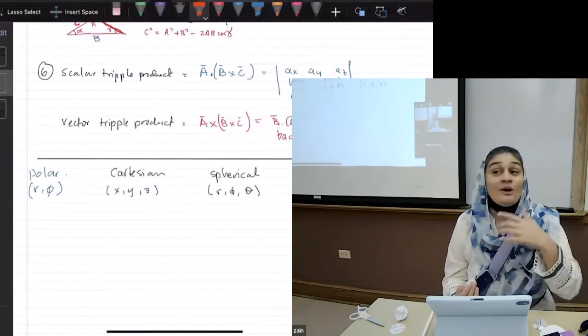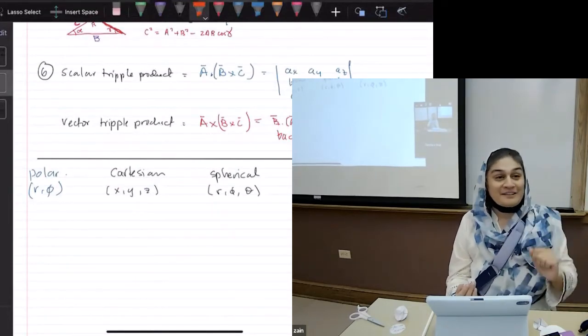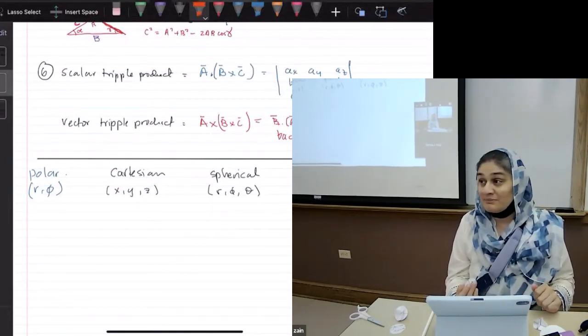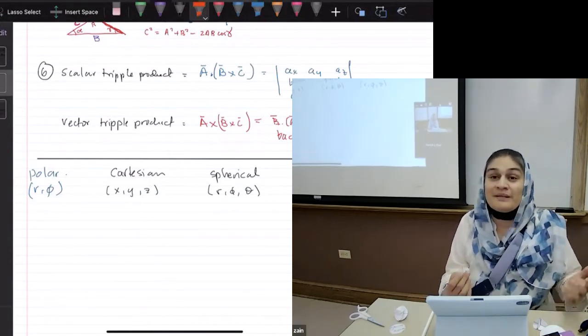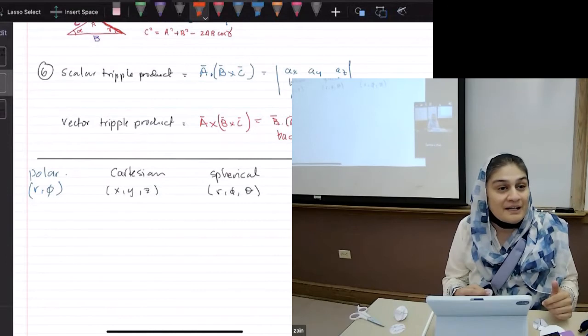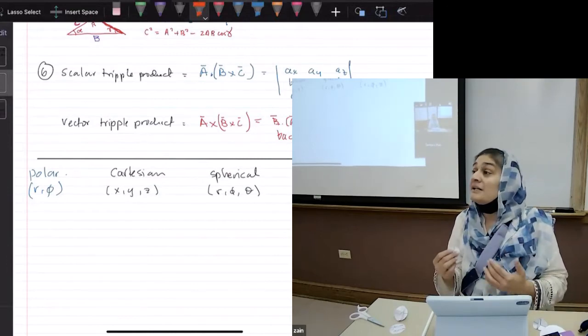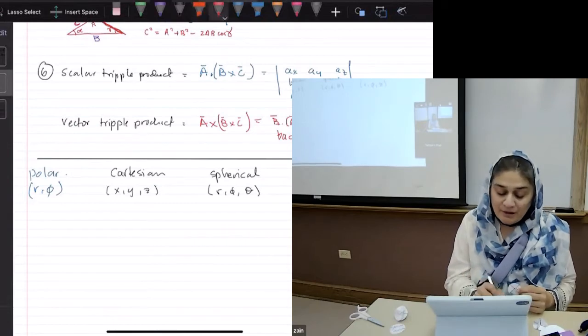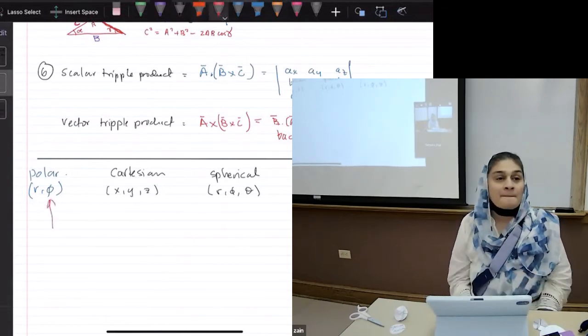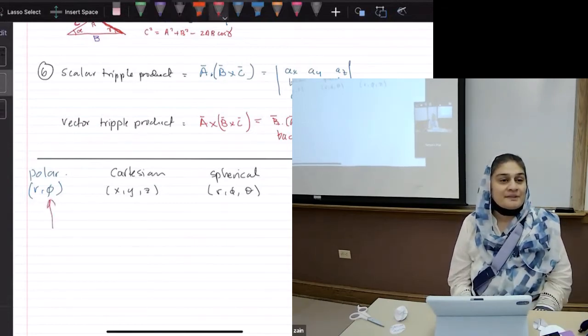Now, the problem is you don't always go around in a circle. Sometimes you go half a circle. Sometimes you only do quarter of a circle. Sometimes you only do 20 degrees. What do you do in that case? You define another variable that guess what they decide to call it? Phi.